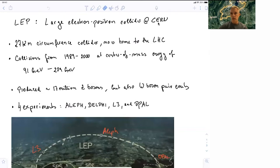The 27 kilometer, or about 16 mile circumference collider, is now the home of the Large Hadron Collider at CERN. And it's being used there to collide protons with protons.